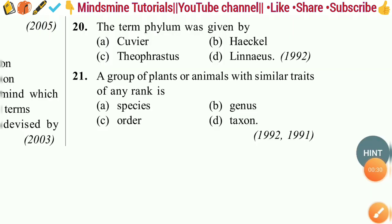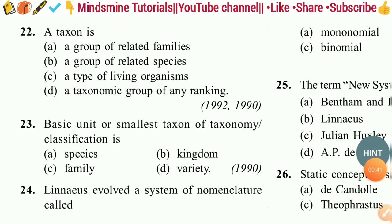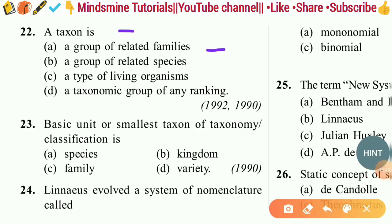Question twenty-one: A group of plants or animals with similar traits of any rank is — species, order, genus, or taxon? The correct answer is option D — taxon. Question twenty-two: A taxon is — a group of related families; a group of related species; a type of living organisms; or a taxonomic group of any ranking? The right answer is option D — a taxonomic group of any ranking.